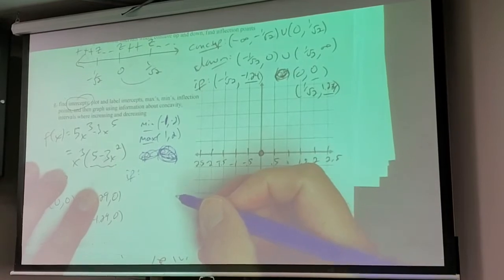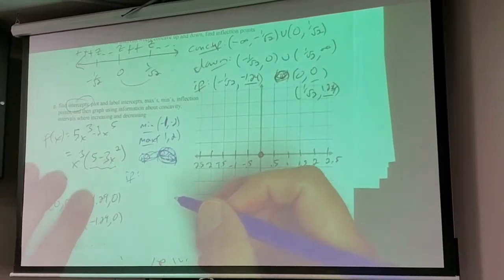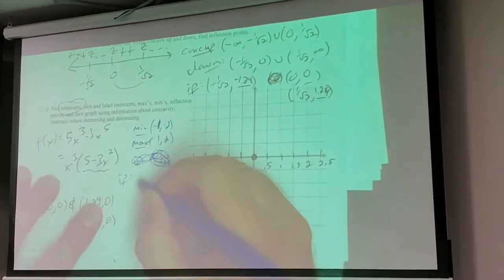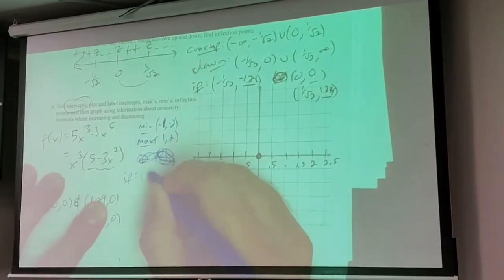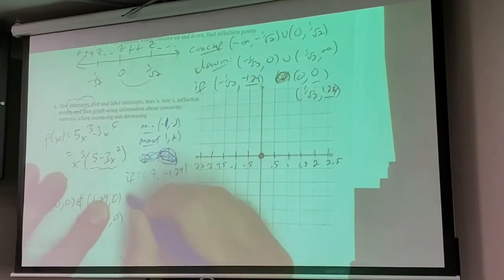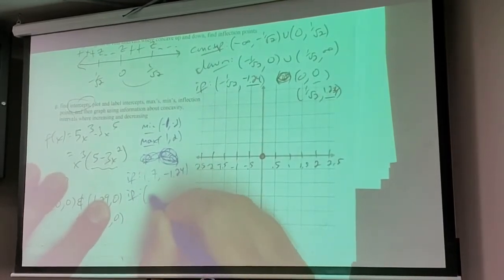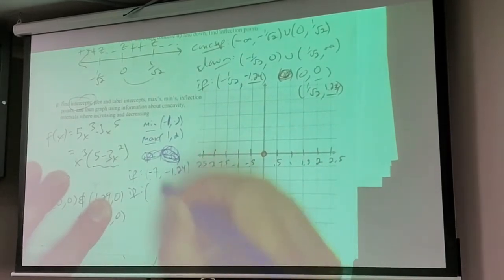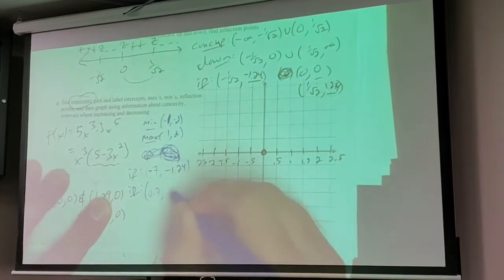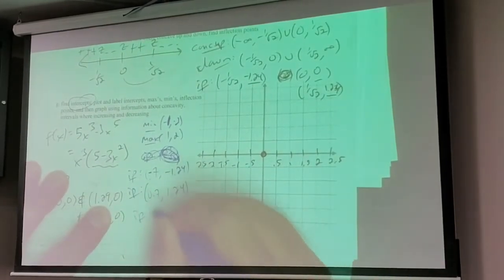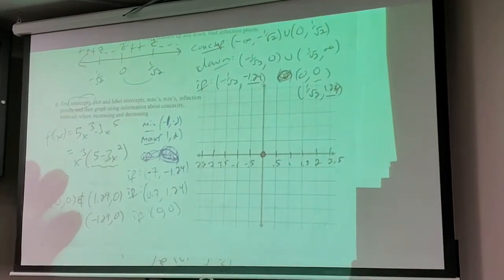One divided by root two is about 0.707. We'll just say 0.7 since we're doing this by hand. There's an inflection point at approximately negative 1.24, positive 0.7, positive 1.24, and there's an inflection point at (0, 0).